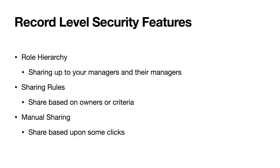Sharing rules help us share a group of records on a going-forward basis depending on a certain set of criteria. There are two types: owner-based sharing rules and criteria-based sharing rules. Owner-based sharing rules are like: if sales rep one owns a record, then share it with sales rep two. Criteria-based sharing rules work differently — for example, if we have a sales coach who helps with large deals, anytime we have an opportunity above $100,000 we want to share it with the sales coach so they can see what opportunities are being worked and coach where needed.